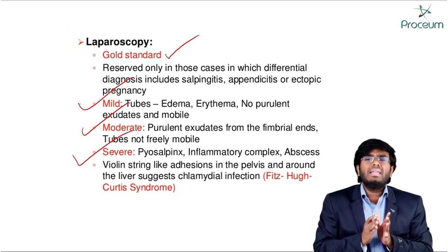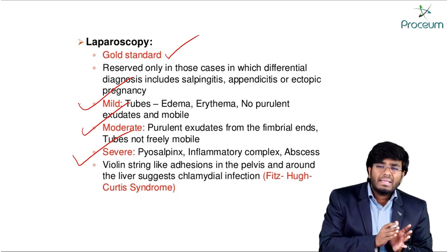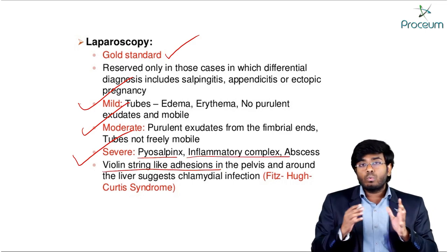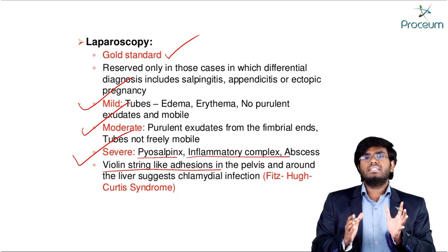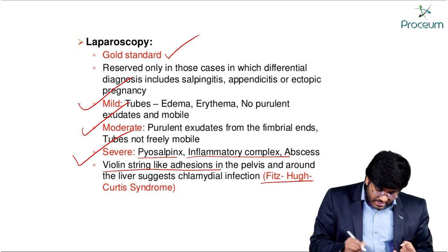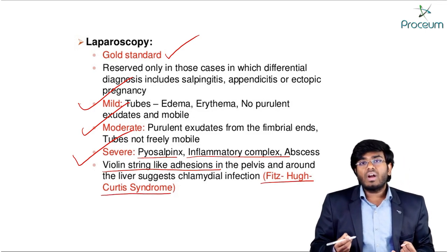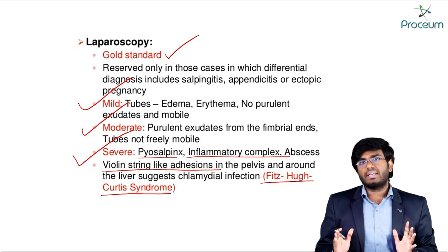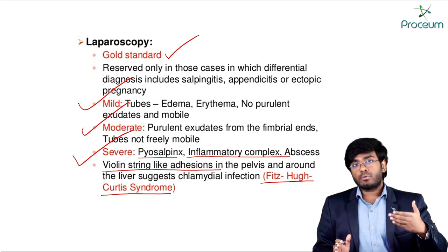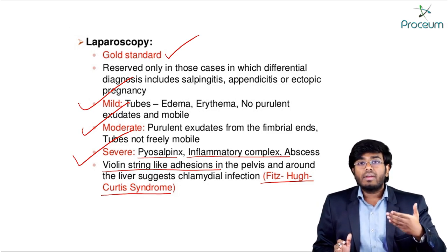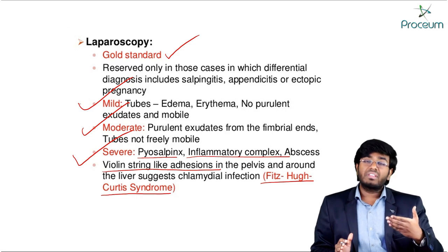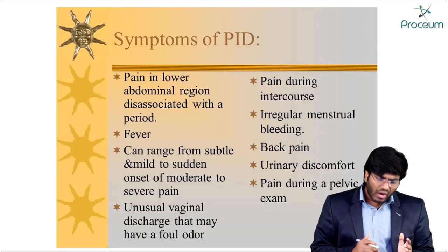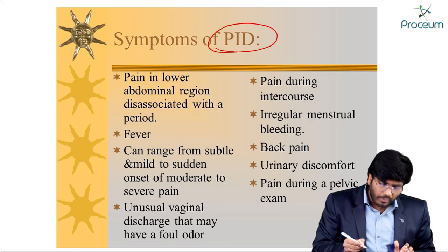In severe PID, there is pyosalpinx, inflammatory complex, and violin string-like adhesions around the liver (perihepatitis) — this is known as Fitz-Hugh-Curtis syndrome. The classification into mild, moderate, and severe is important because treatment is guided by the severity. This leads us to the symptoms of PID.